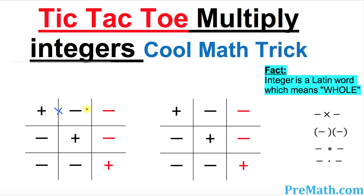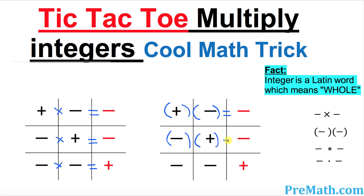Positive times negative gives us negative. Negative times positive results in negative. And finally, negative times negative is going to be positive. In this example we use a cross to multiply signs, but sometimes people use parentheses. So positive times negative is negative, negative times positive is negative, and negative times negative is positive.